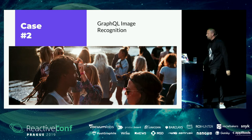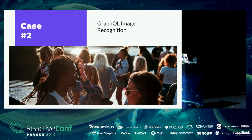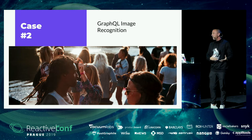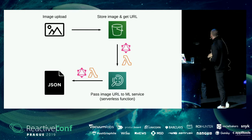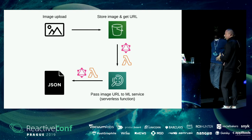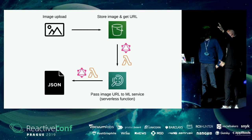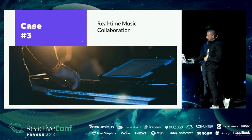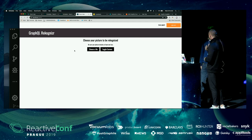We're doing GraphQL image recognition — taking an image, running it through a GraphQL operation to a machine learning service, and returning the information in the response. Come on up! The way this works: we take a picture, send it to an image service, kick off an operation to a machine learning service with the image info, get data back as JSON. Let's take a picture — go ahead and come right here.